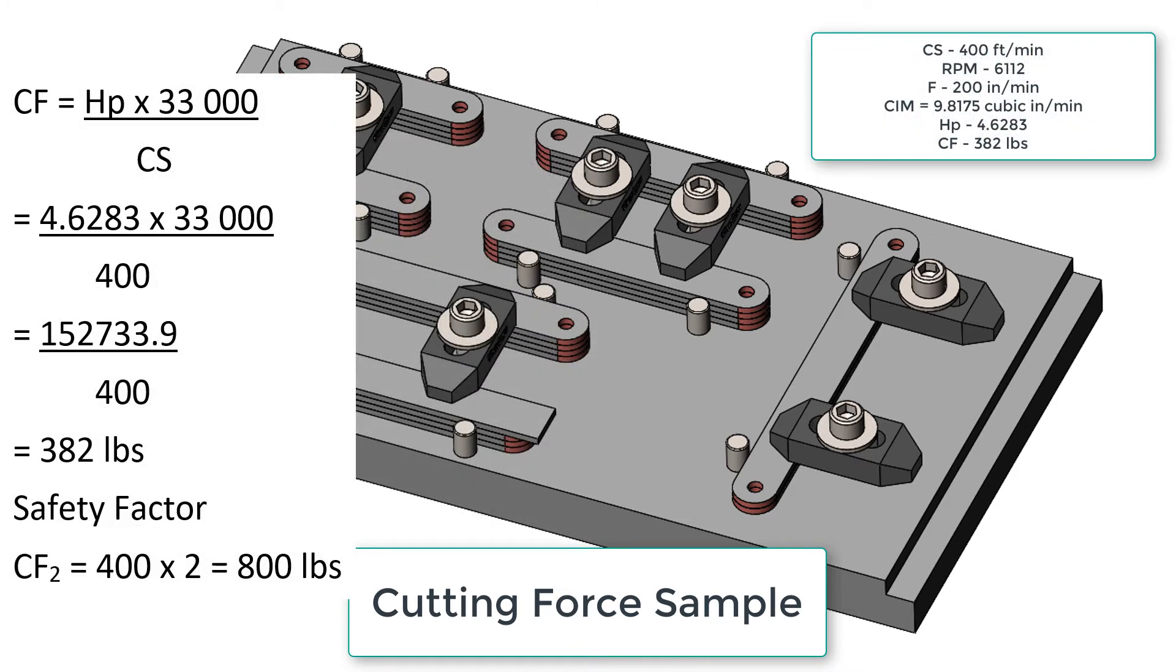Now that my horsepower is known I can use it to calculate the cutting force. I can multiply the horsepower by 33,000 and divide by the cutting speed of 400 to get a cutting force of 382 pounds.